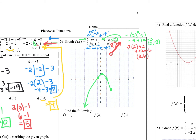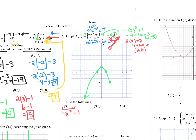f of negative one uses negative x squared plus one, since x is less than or equal to two. Plugging in: negative negative one squared plus one is negative one plus one, which equals zero. Checking the graph, negative one does output zero — you can go both ways. For f of two, we again use the first piece since x is less than or equal to two, and from the graph x equals two gives an output of negative three.